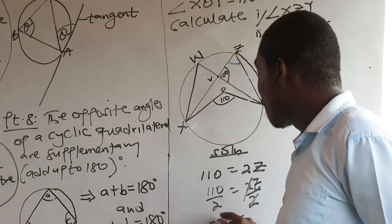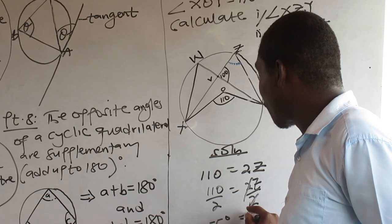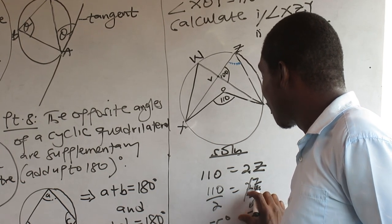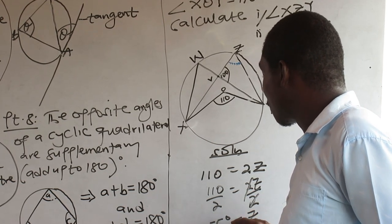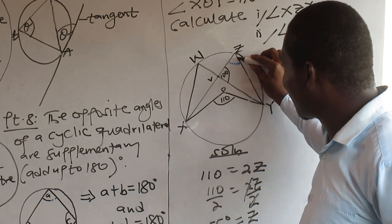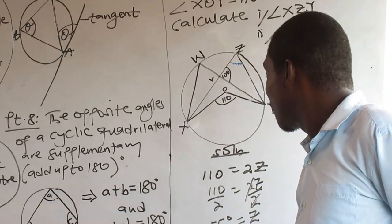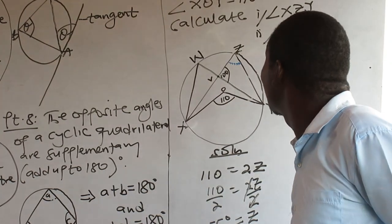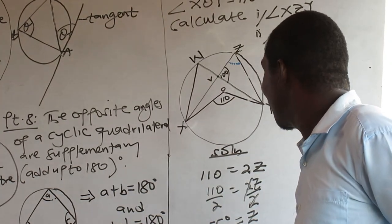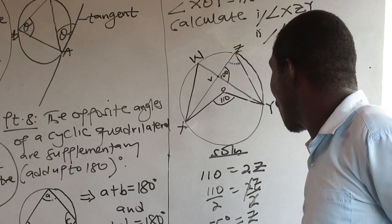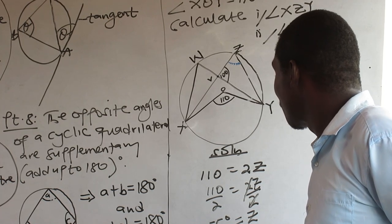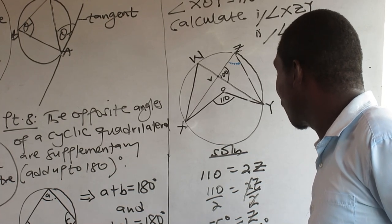The answer is 55 degrees. So angle XZY equals 55°. Once the angle here at Z is 55, angle XZY equals 55, and you finish it down.